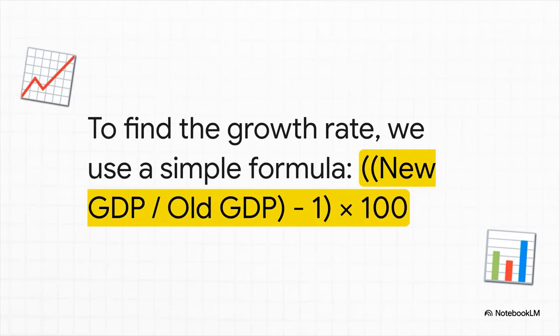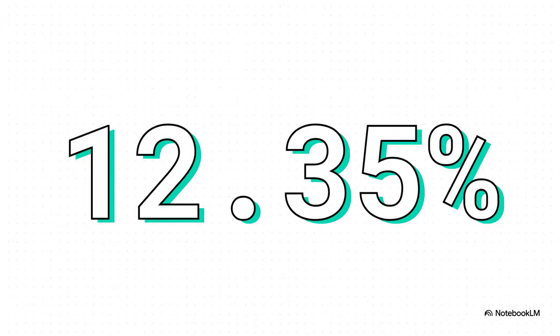Well, to figure that out, there's another pretty simple formula. You just take the new GDP, divide it by the old one, subtract one, and then multiply the whole thing by 100 to get a nice, clean percentage. And when we plug our numbers into that formula, we get a growth rate of 12.35%. Now, let me tell you, in the real world, that is an insane amount of growth for one year. Most big countries are thrilled with 2 or 3%. So our little economy is absolutely on fire.